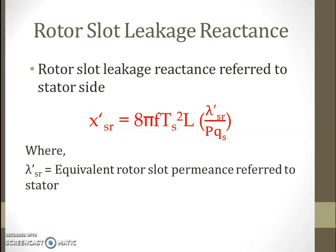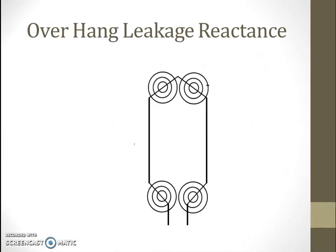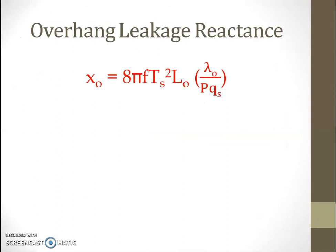Next is the overhang leakage reactance. In our figure, we have one coil with active length L, and some leakage flux known as overhang leakage flux. Overhang leakage reactance Xo is given by: 8·pi·f·Ts²·Lo·lambda_o / (p·qs), where Lo is the overhang length and lambda_o is the specific permeance of the overhang.